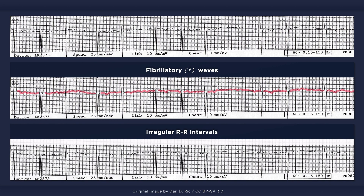When the fibrillatory waves are imperceptible, the underlying rhythm can still be recognized via the irregular RR intervals. With AFib, the RR intervals are generally unequal in duration. As in this ECG, some intervals will be longer, while others will be noticeably shorter.